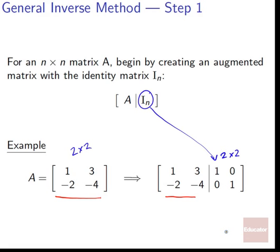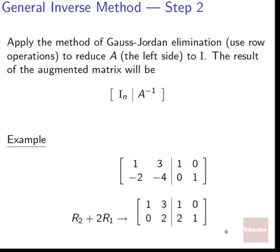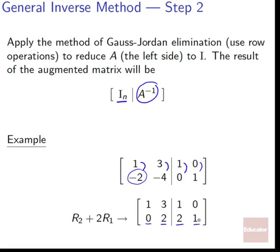For an n×n matrix A, begin by creating an augmented matrix with the identity matrix I_n. For example, if A equals [1, 3; -2, -4], we create the augmented matrix [1, 3 | 1, 0; -2, -4 | 0, 1] — the left side is A and the right side is the identity. Then apply Gauss-Jordan elimination: use row operations to reduce the left side to the identity matrix. Row 2 plus 2 times row 1: 0, 2, 2, 1. So the new matrix is [1, 3 | 1, 0; 0, 2 | 2, 1].